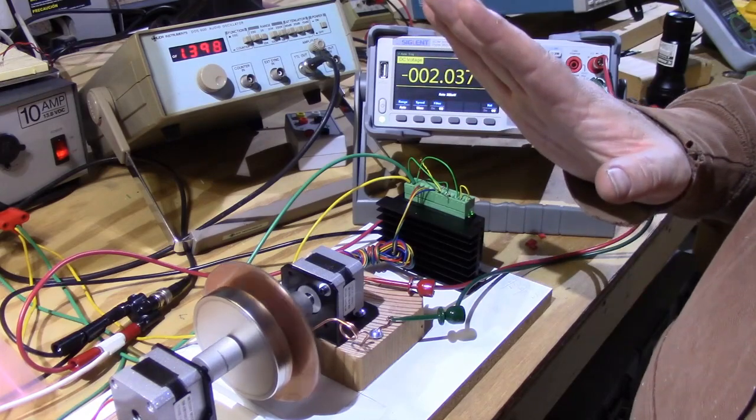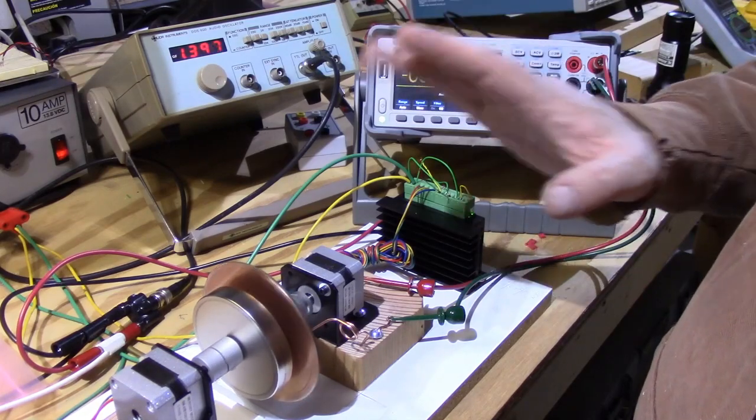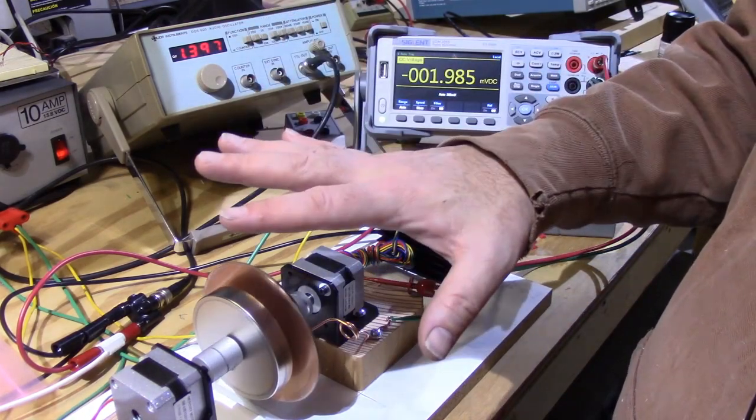But we have other paradox experiments that will demonstrate that only the velocity of the disc matters, nothing to do with the velocity of the magnet.